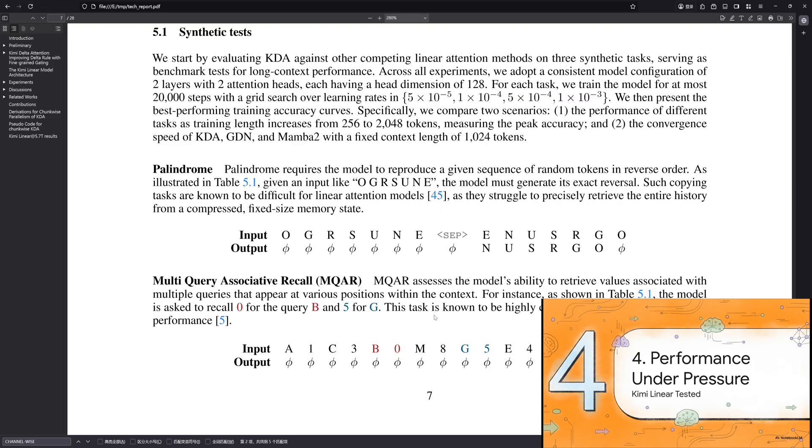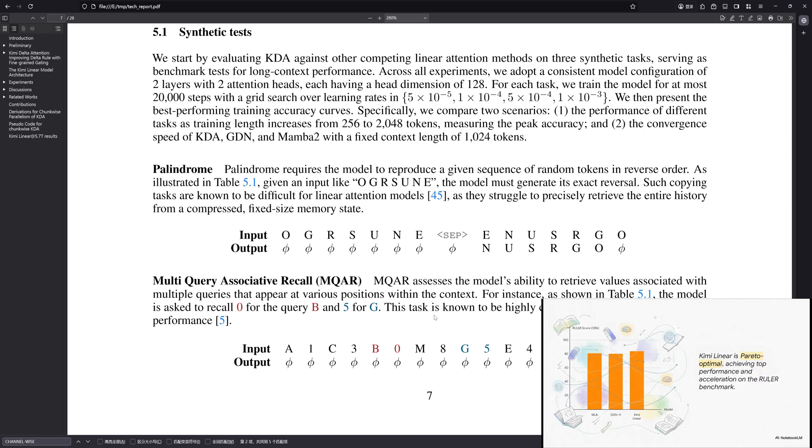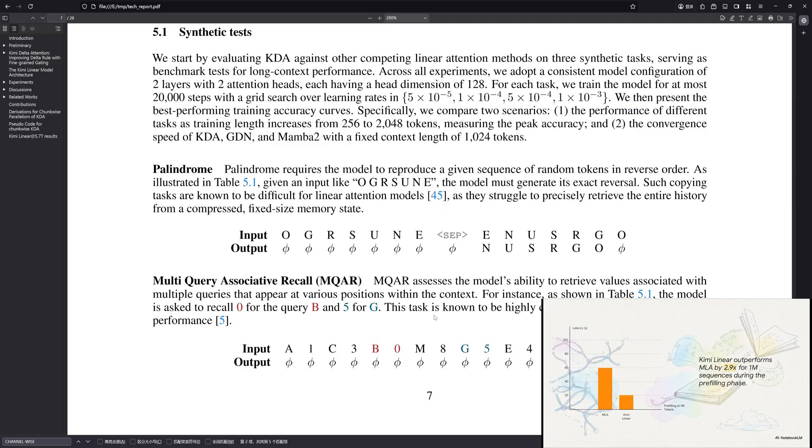So, the theory is cool, the engineering is smart, but does it actually work? Now we get to the proof. How does chemilinear stack up an affair, head-to-head fight against the other big architectures out there? Well, let's take a look. On the RULR benchmark, which is a really tough test for understanding long documents, chemilinear doesn't just win, it wins decisively. It's got a significant lead over both the standard full attention model and the previous hybrid model. The takeaway here is so important. It's not just more efficient, it's actually more accurate.